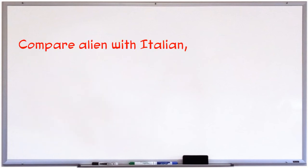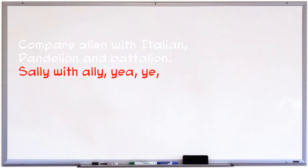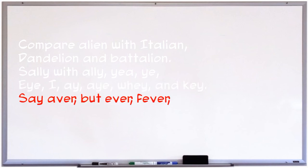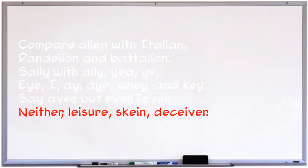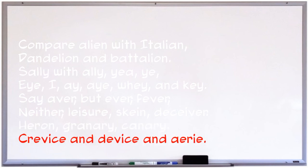Compare alien with Italian, dandelion and battalion. Sally with ally, yea, ye. Eye, I, aye, I, way, and key. Say aver, but ever, fever. Neither, leisure, skein, deceiver. Heron, granary, canary. Crevice, and device, and eerie.